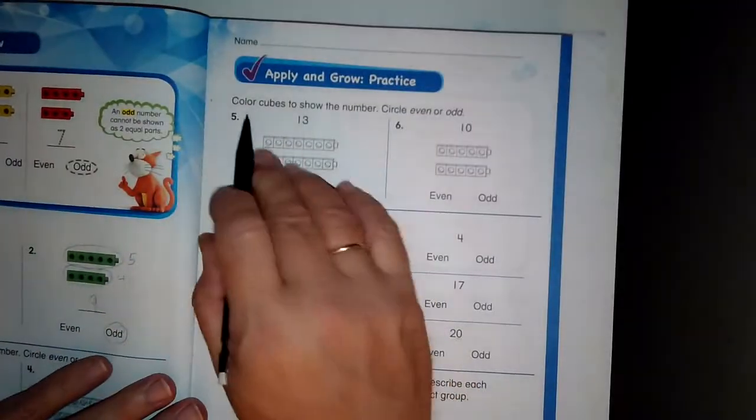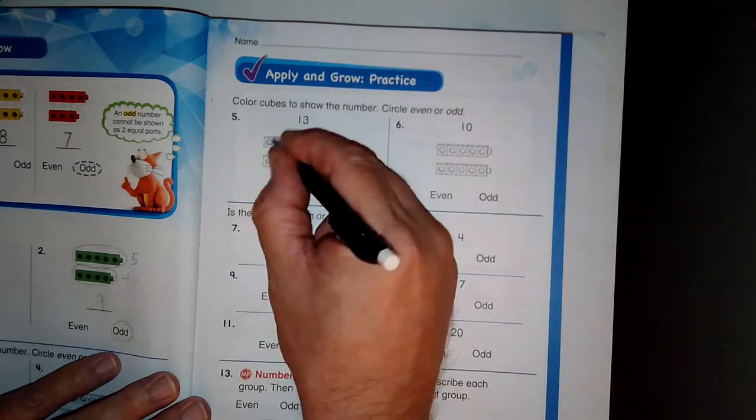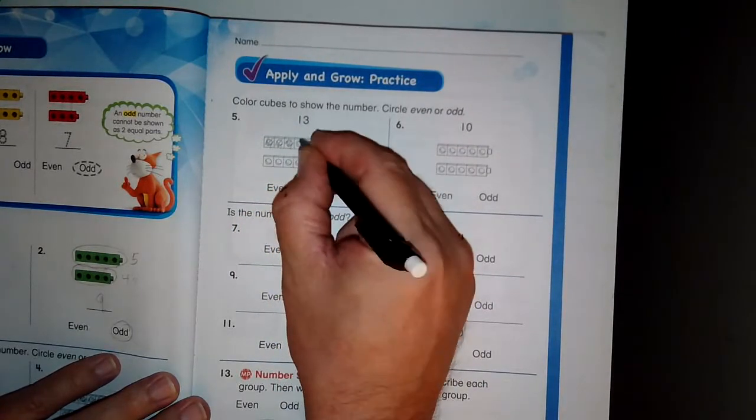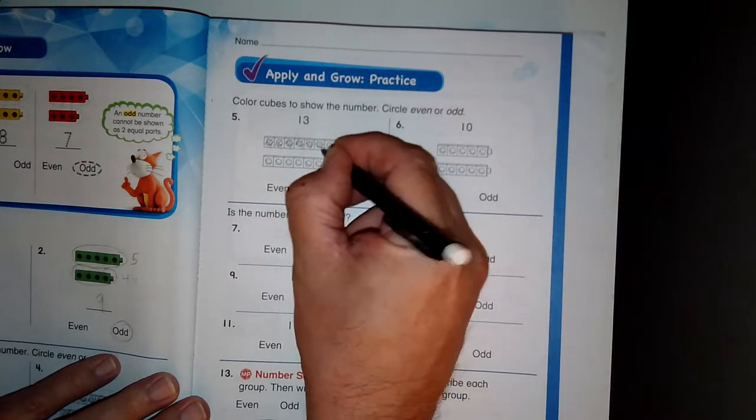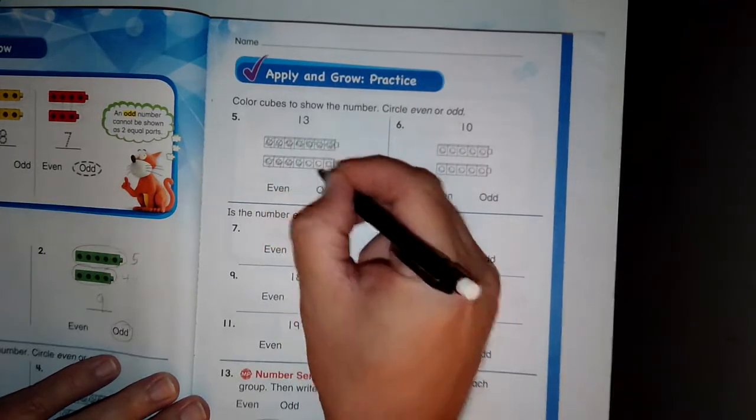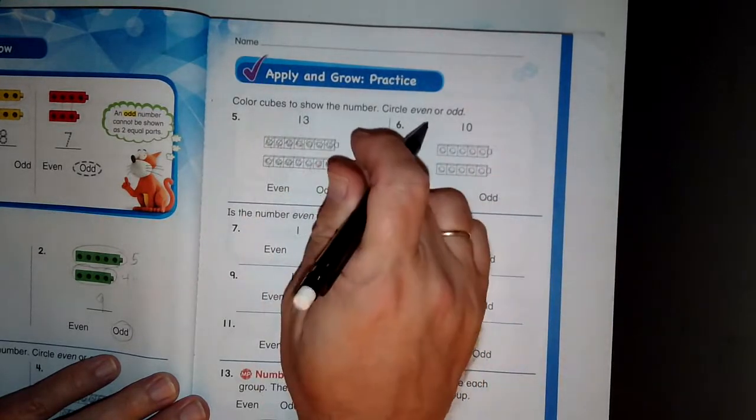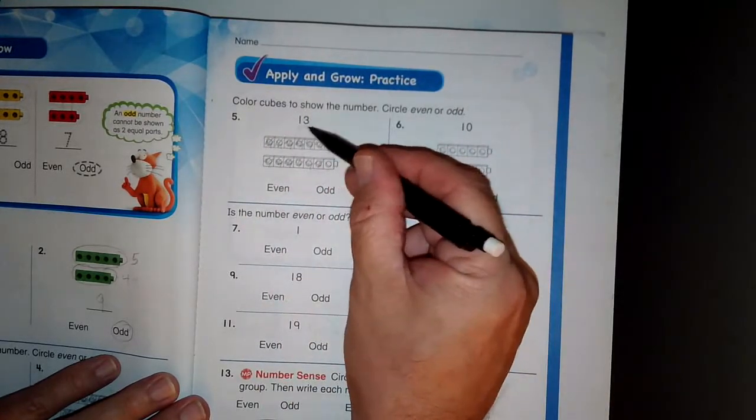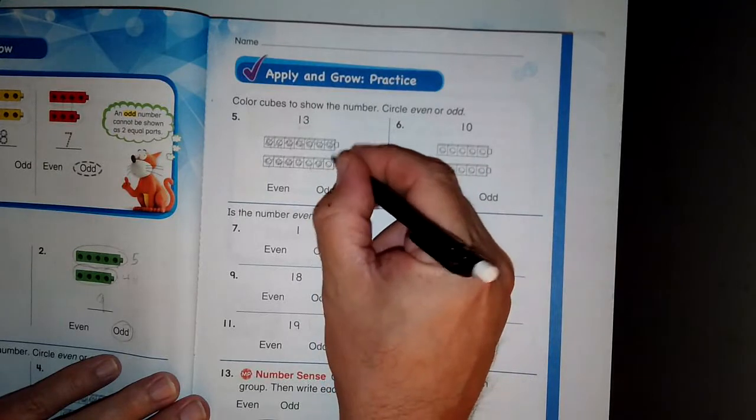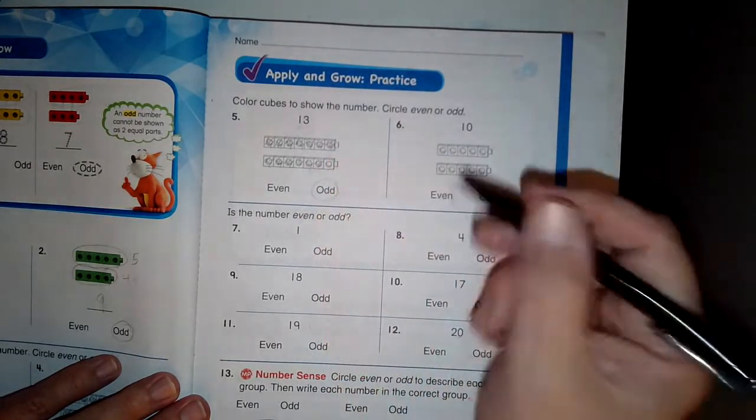Let's come over here. Color the cubes to show the number circle even or odd. One, two, three, four, five, six, seven, eight, nine, ten, eleven, twelve, thirteen. And I don't color in the last one because I have to stop at this number. Thirteen, that is an odd number because it does not have partners for everybody.